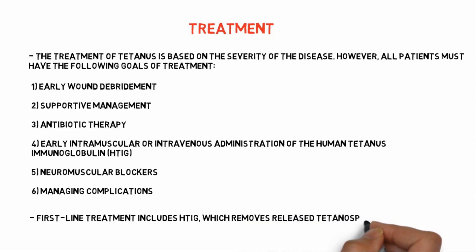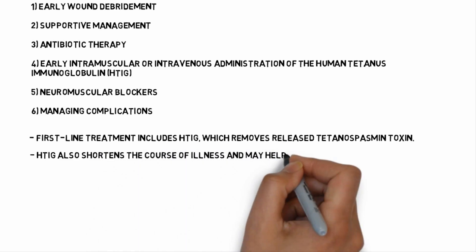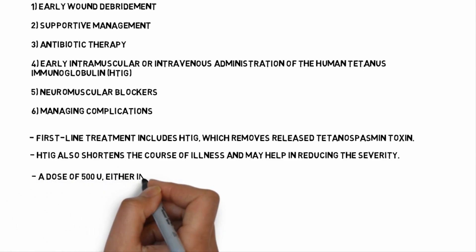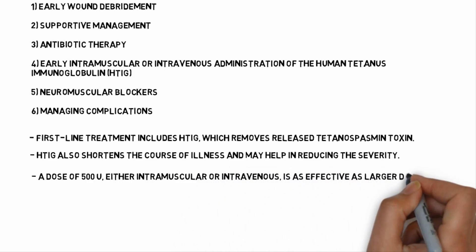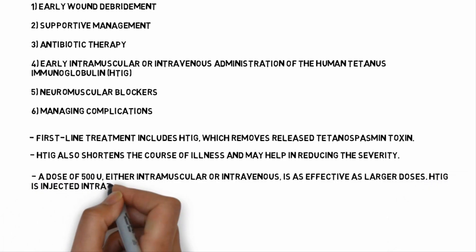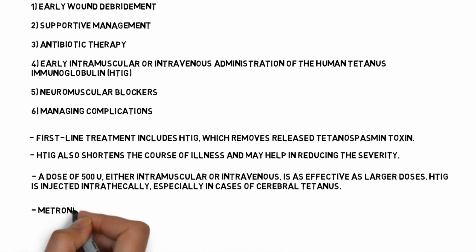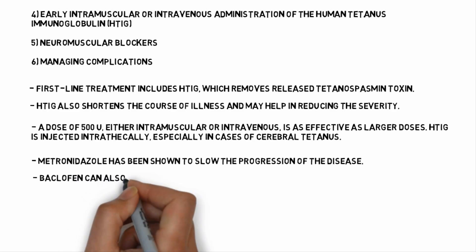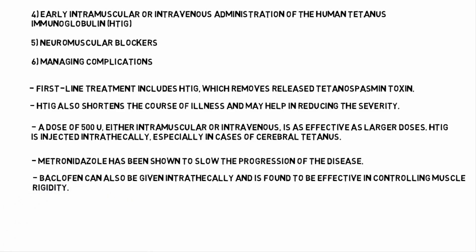The first-line treatment for tetanus includes HTIG, which removes released tetanospasmin toxin. HTIG also shortens the course of illness and may help in reducing the severity of tetanus. A dose of 500 units, either intramuscular or intravenous, is as effective as large doses. HTIG is injected intrathecally especially in cases of cerebral tetanus. Metronidazole has been shown to slow the progress of tetanus. Baclofen can also be given intrathecally and is found to be effective in controlling muscle rigidity.